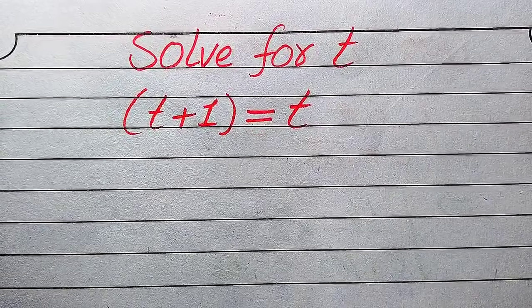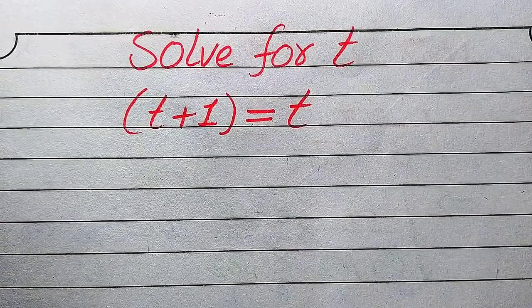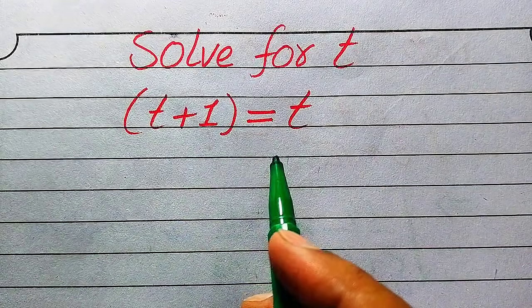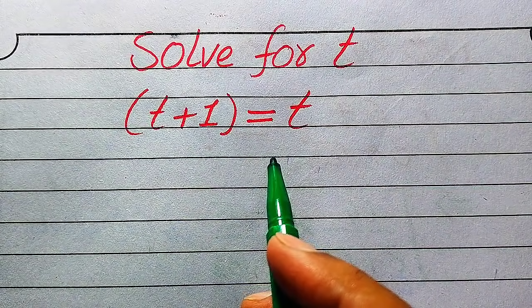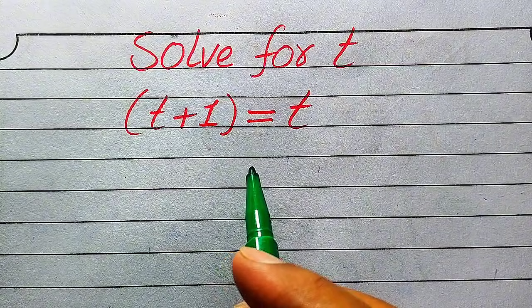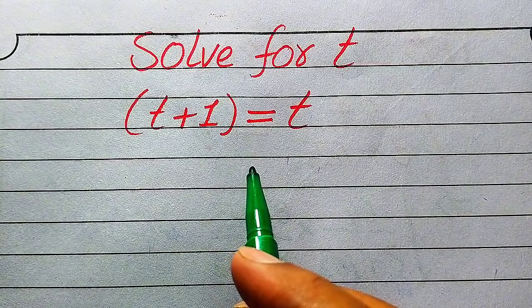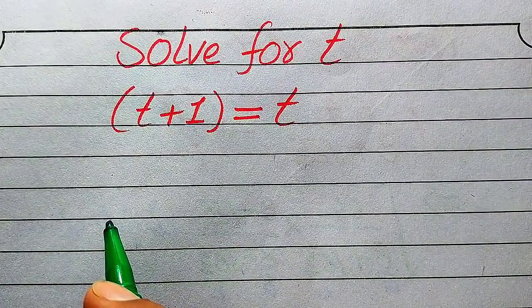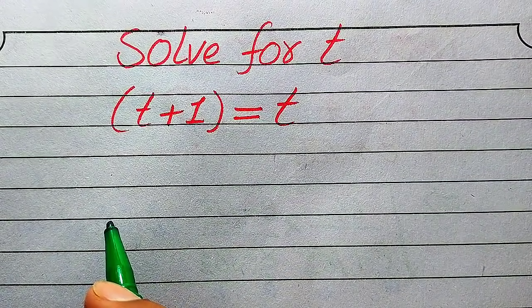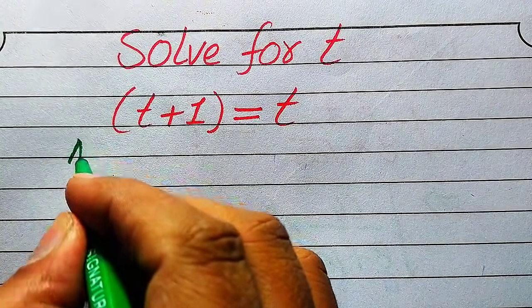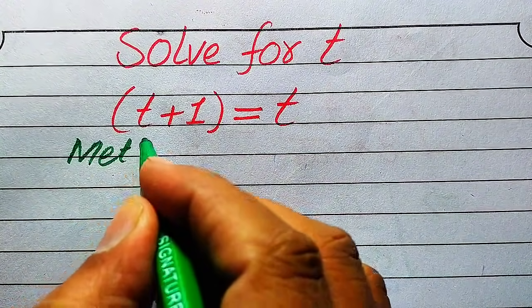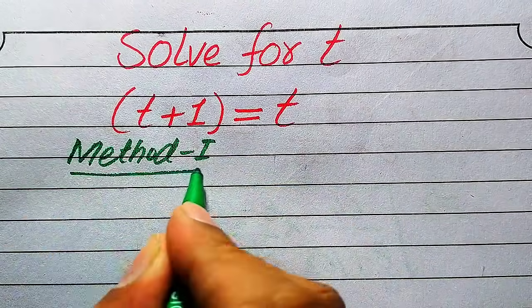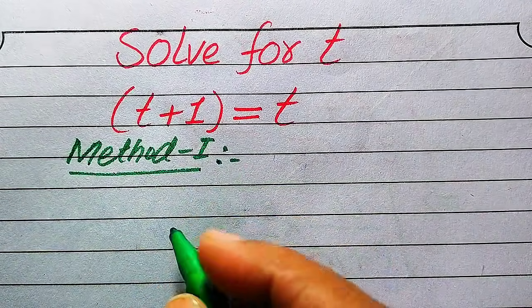Hello everyone. How to solve this problem? For the values of t, if we have √(t+1) equals √t and we solve this problem for all the values of t. So here first we need to find all the roots of this equation, and at the last we will verify which of the roots are solutions and which of the roots are extraneous roots. So we solve this problem using two methods. If you have any other method in your mind, please don't hesitate to write it in the comment section.